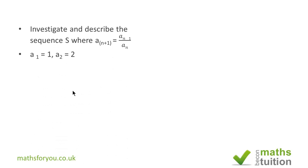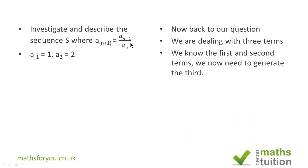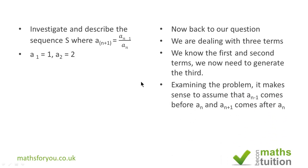Now back to our original question. We have three terms: a sub n minus 1, a sub n, and a sub n plus 1. It makes sense to assume that a sub n minus 1 comes before a sub n, and that a sub n comes before a sub n plus 1. In effect we have three terms, we know the first term is 1 and the second term is 2, and now we are supposed to find the third term.